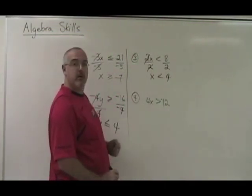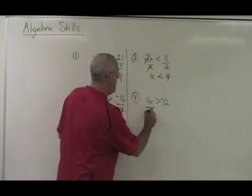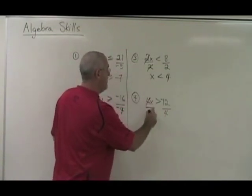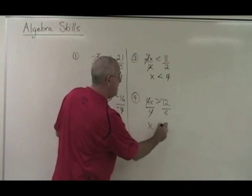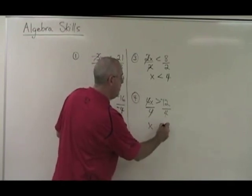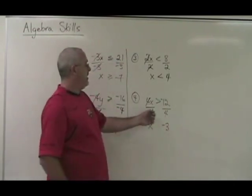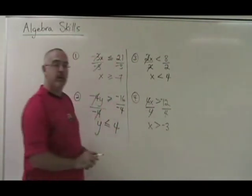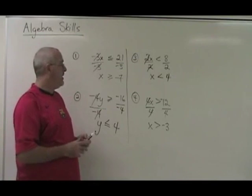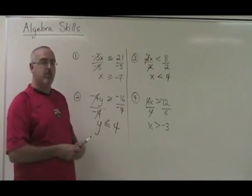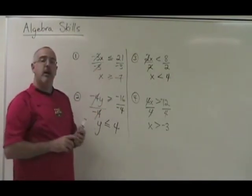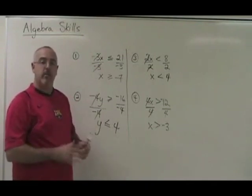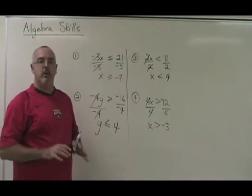Here, my x is being multiplied by a 4. I divide both sides by 4. The 4 is canceled. X is isolated. Negative 12 divided by 4 is negative 3. But because I divided both sides by a positive number, I keep the symbol the way it is facing. Whenever you divide both sides of an equation by a negative number, you must flip the symbol backwards. And whenever you divide both sides by a positive number, you leave the symbol facing the way it already is.